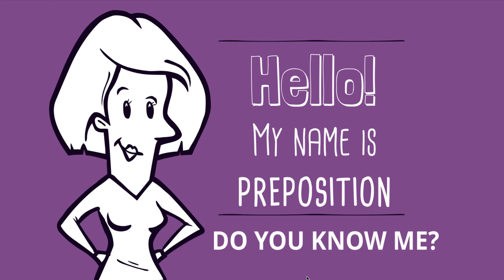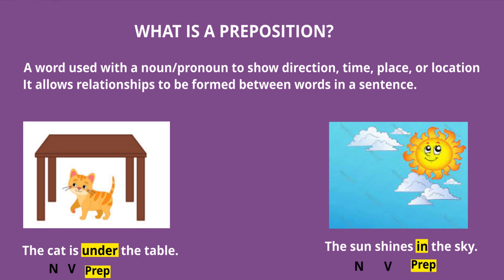Hello everyone, welcome back to my channel Easy Peasy Vocab. My name is preposition — do you know me? A preposition is a word used with a noun or pronoun to show direction, time, place, or location. It allows relationships to be formed between the words in a sentence to make it easily understandable and sensible.